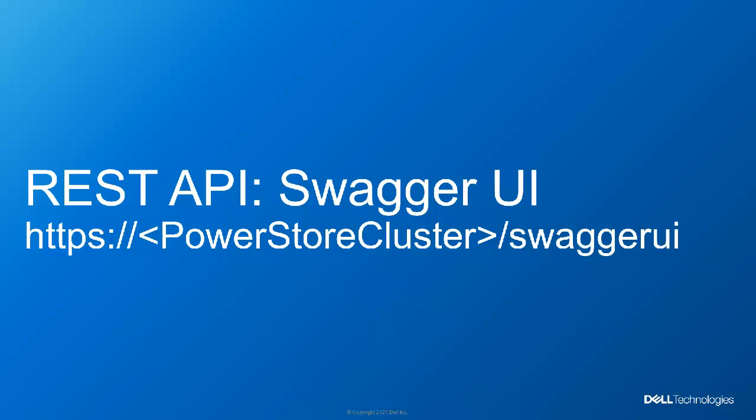As mentioned before, Swagger UI is a good starting point to learn more about PowerStore REST API. We can access Swagger UI with any supported browser using the management URL and append slash Swagger UI — for instance, https colon double slash IP address of the PowerStore system slash Swagger UI.